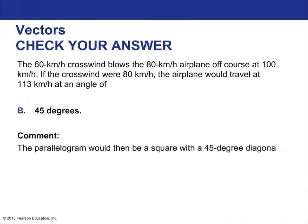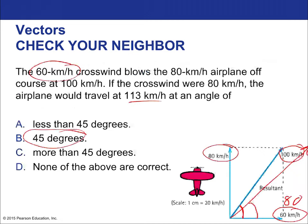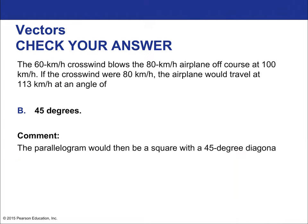The parallelogram becomes a square when both velocity components are equal, and the angle crossing that square from vertex to vertex is 45 degrees.